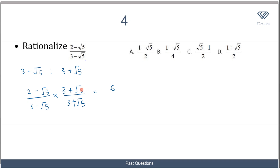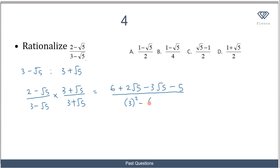Continuing the expansion: 2 times root 5 gives plus 2 root 5; minus root 5 times 3 gives minus 3 root 5; and minus root 5 times root 5 gives minus 5, since root 5 times root 5 is 5. For the denominator, we use the difference of two squares: 3 squared minus root 5 squared, which is 9 minus 5.